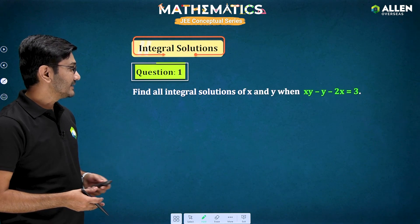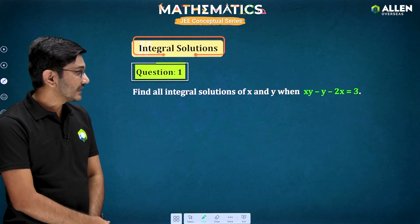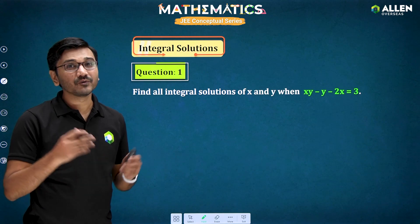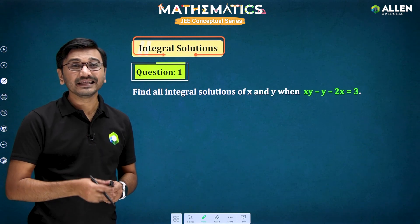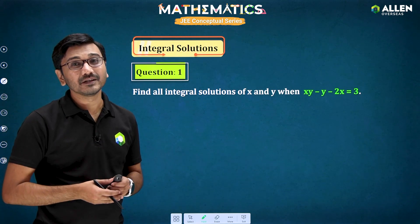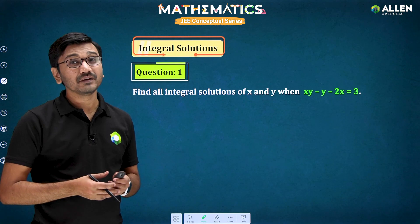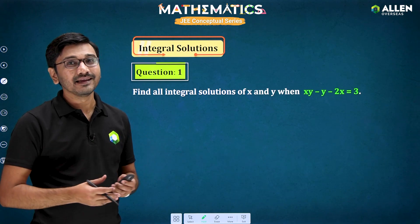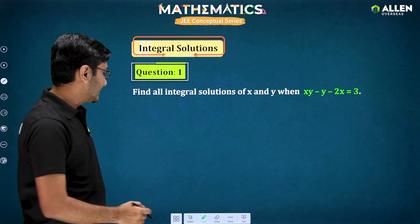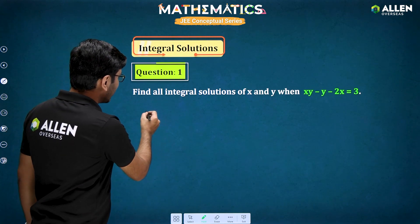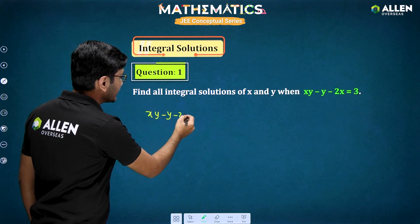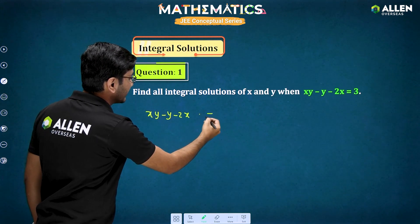The question here is: we have an equation xy minus y minus 2x equals 3. We want to find out what are the integral values of x and y we can have — those integral values of x and y will be called as the integral solutions to this equation. So what's given here? xy minus y minus 2x equals 3.